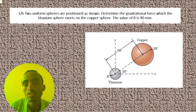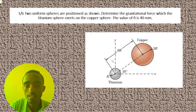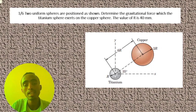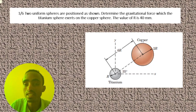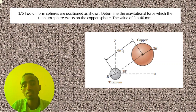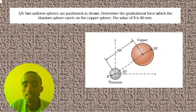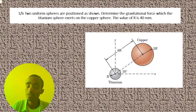We need to determine the gravitational force which the titanium sphere exerts on the copper sphere. The value of r is 40 millimeters. The distance between the center of the titanium sphere and the copper sphere is 6r, so you can substitute 40 millimeters in place of r to get the distance.